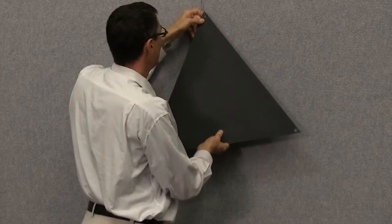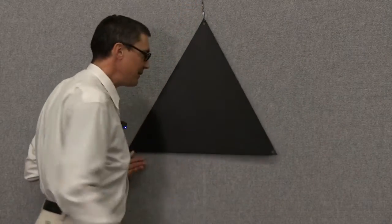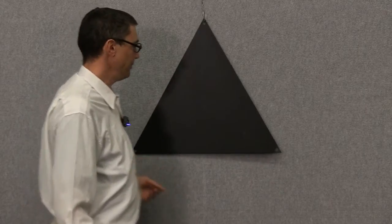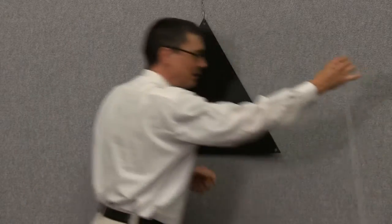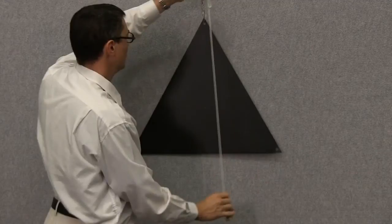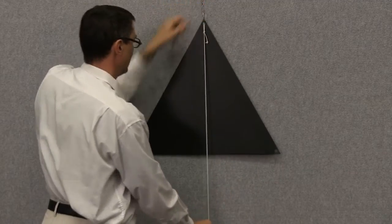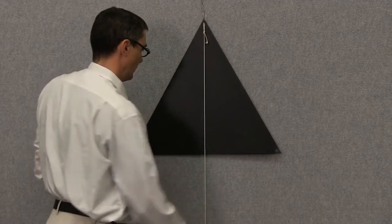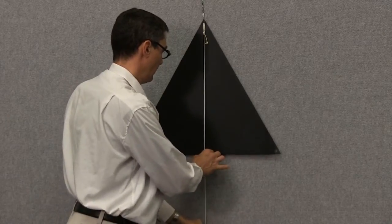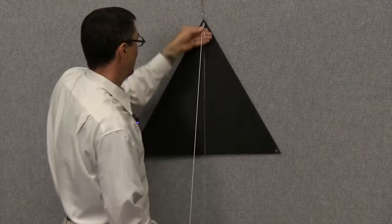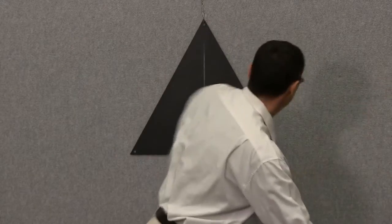Now if we have a slightly less symmetrical object, we'll see if we get a similar behavior. This is an equilateral triangle, so it's still reasonably symmetric. Alright, center of mass lies somewhere on that line.